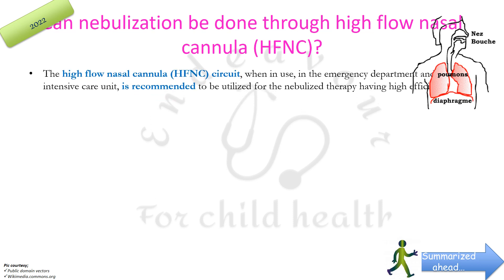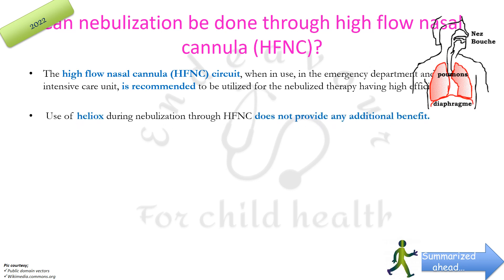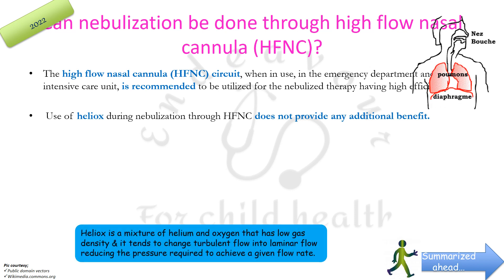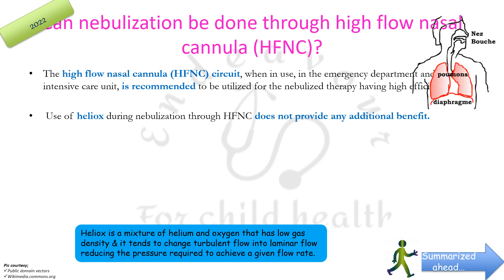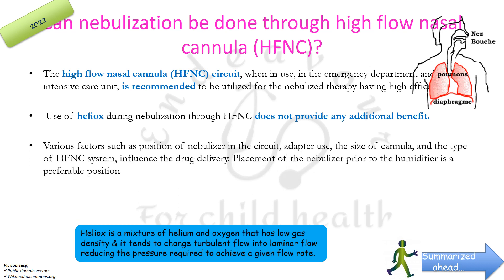High-flow nasal cannula (HFNC) circuit, when in use in the emergency department and ICU, is recommended to be utilized for nebulized therapy due to its high efficiency. However, use of heliox — a mixture of helium and oxygen with low gas density that converts turbulent flow to smoother laminar flow — during nebulization through HFNC does not provide any additional benefit. Various factors such as position of the nebulizer in the circuit, adapter use, size of cannula, and type of HFNC system influence drug delivery. Placement of the nebulizer prior to the humidifier in an HFNC system is the preferable position.